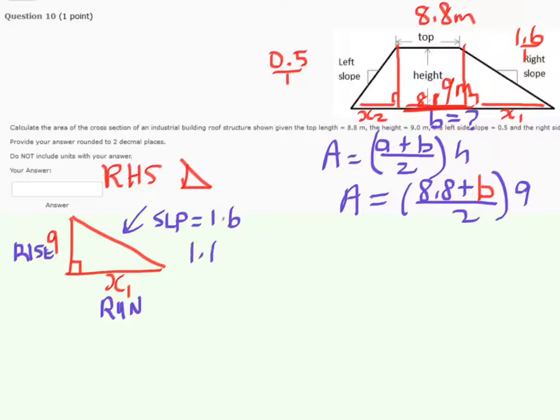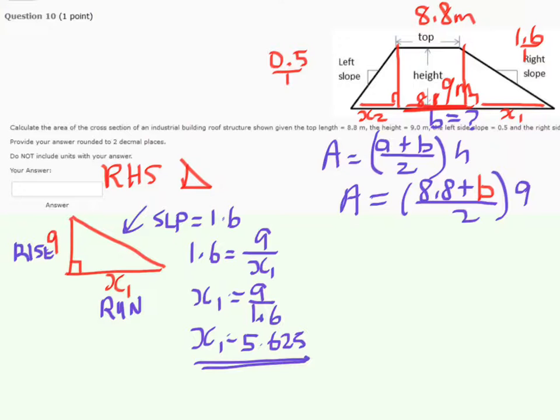So all we know is that the 1.6 slope is equal to the rise of 9 meters to the run of X1. And now we have a relationship that we can use to figure out what the distance is across the bottom of that triangle. So now I can multiply both sides by X1 and divide both sides by 1.6, so I end up with X1 equals 9 divided by 1.6. And 9 divided by 1.6 works out to be a value of 5.625 meters. And so that is the distance across the bottom of the right-hand side of my trapezoid, that little triangular section.